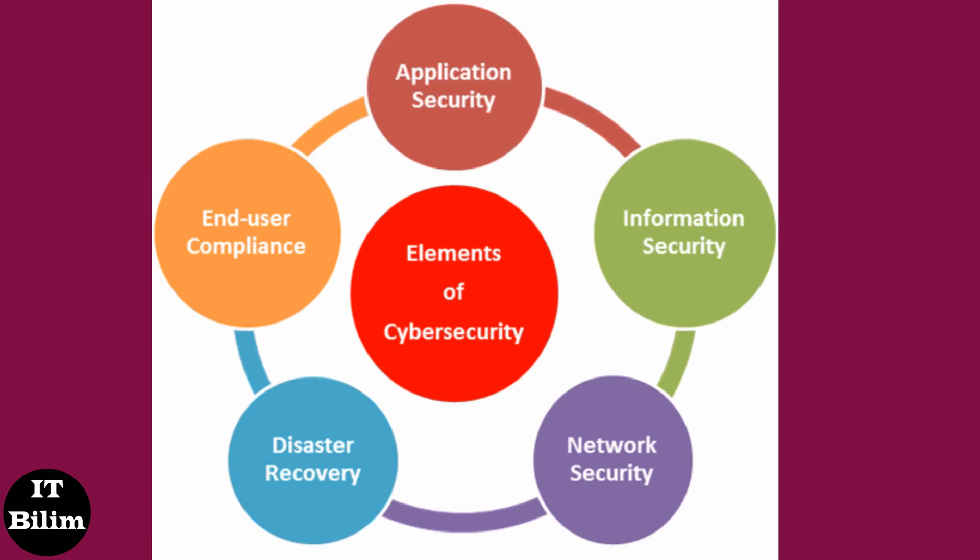Disaster recovery and business continuity: responding to security incidents and any other events that could disrupt systems or lead to data loss. Disaster recovery is a set of rules describing how an organization will deal with the impact of an attack and restore business processes. Business continuity is a plan of action in case an organization loses access to certain resources due to a malicious attack. End user compliance: educating users to reduce the impact of the most unpredictable factor in cybersecurity — the human factor. Even the most secure system can be attacked due to someone's mistake, so organizations should train employees on rules such as not opening suspicious email attachments or plugging in questionable USB devices.